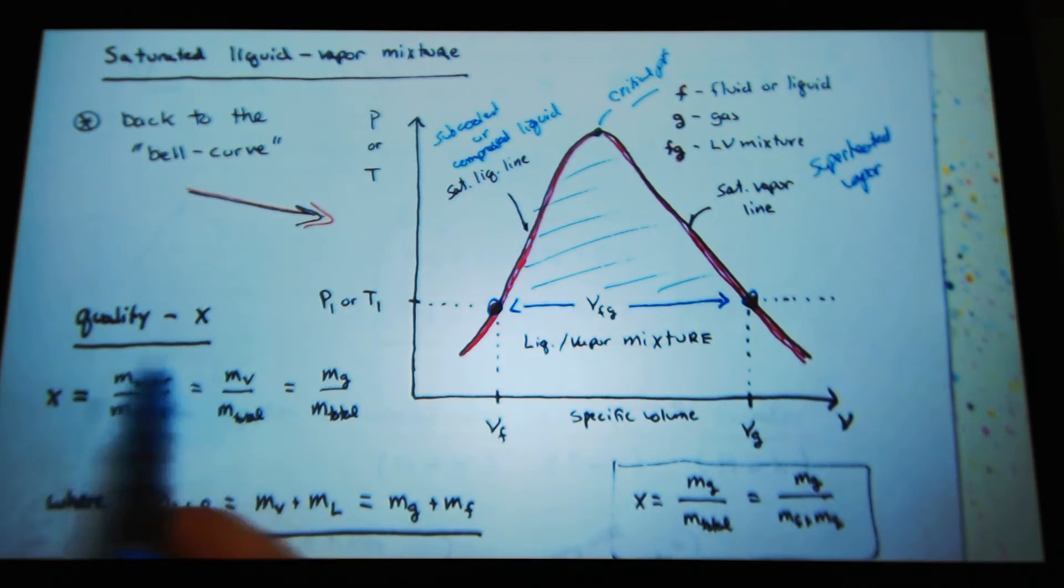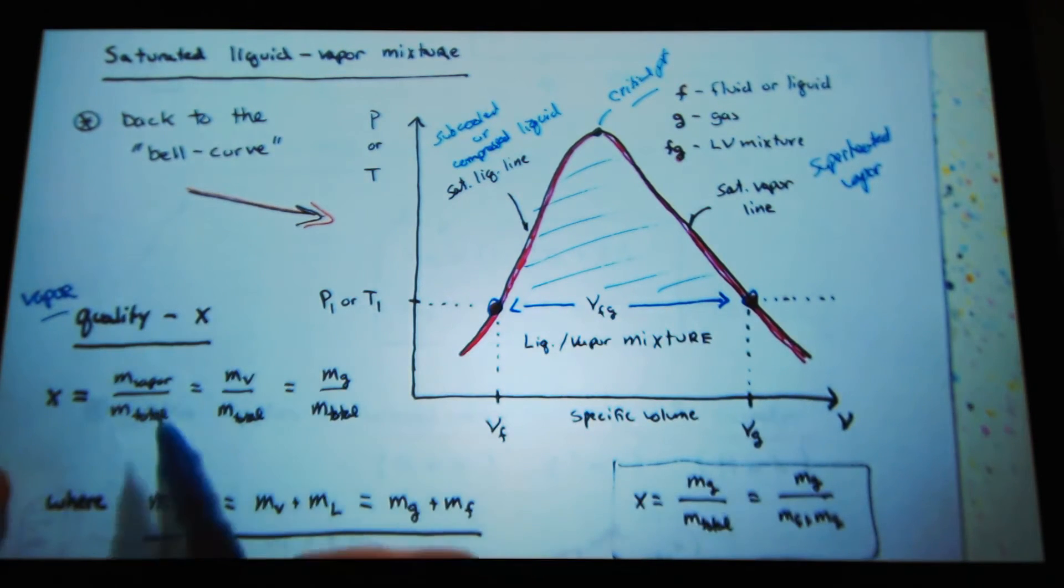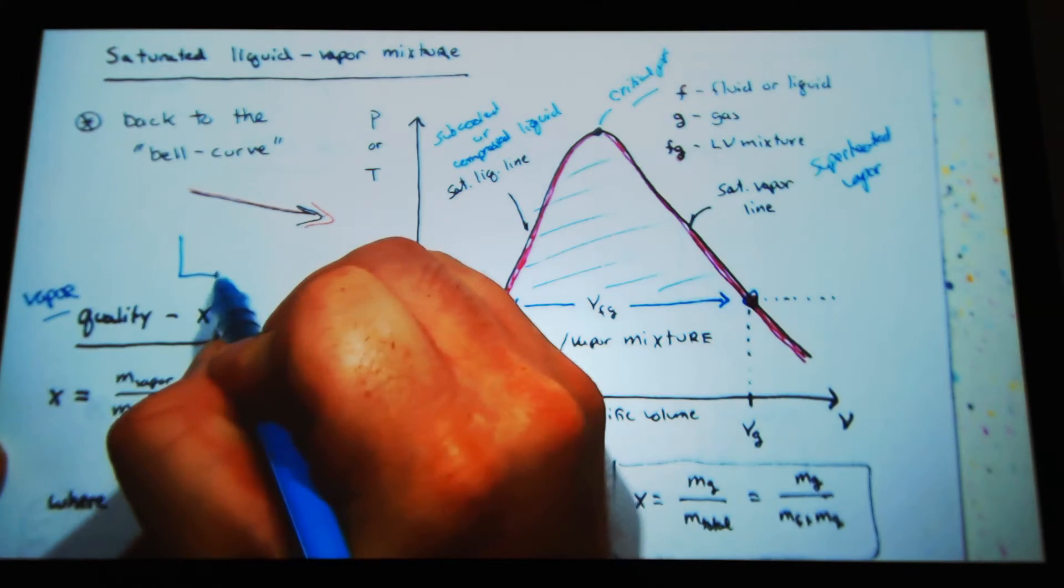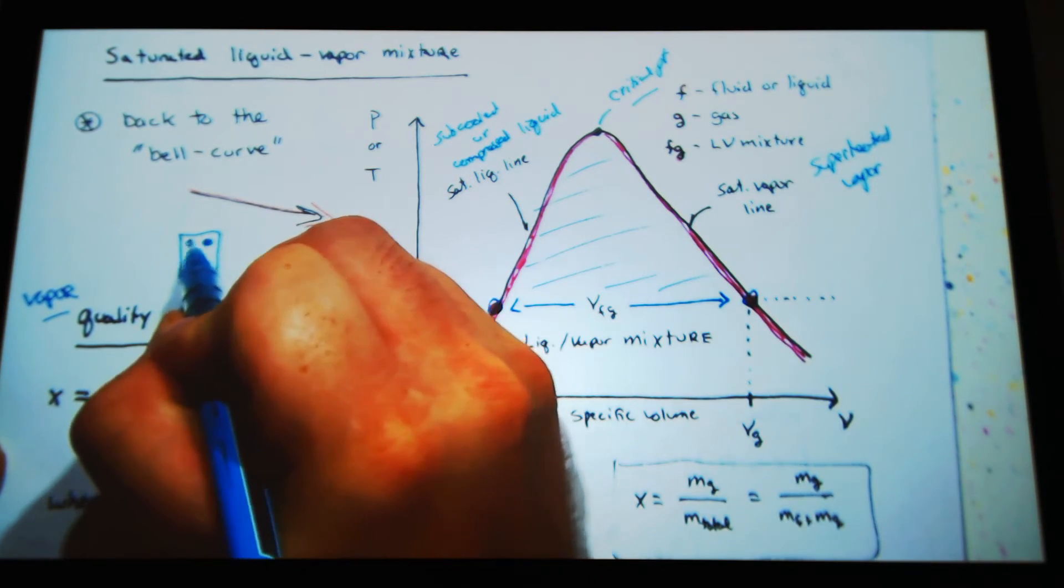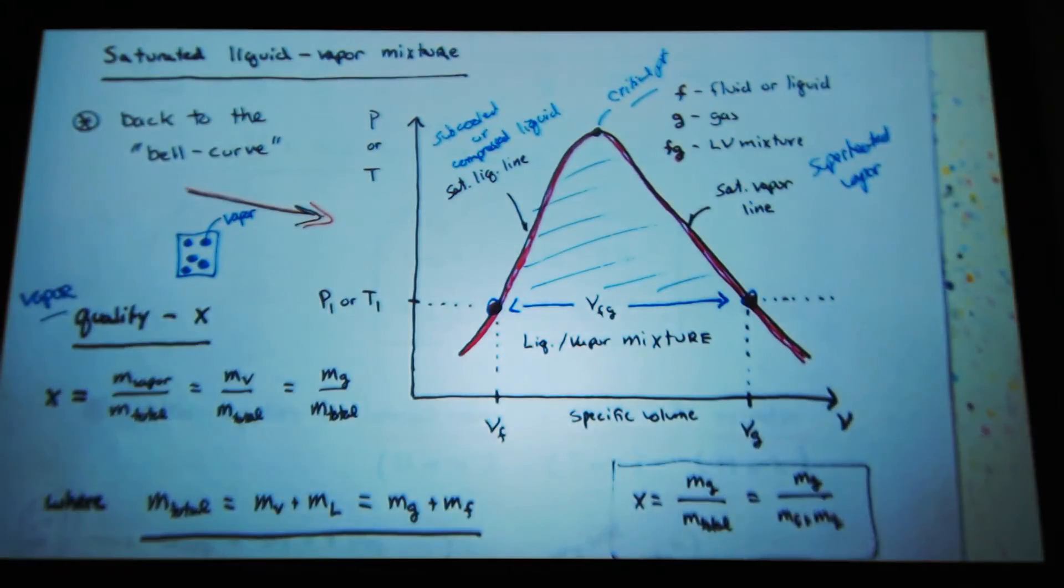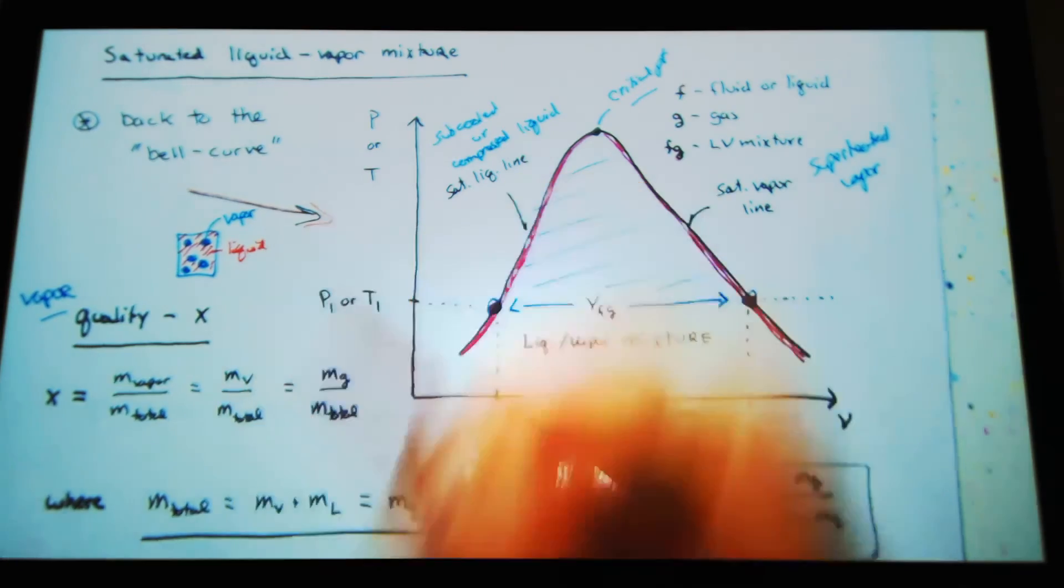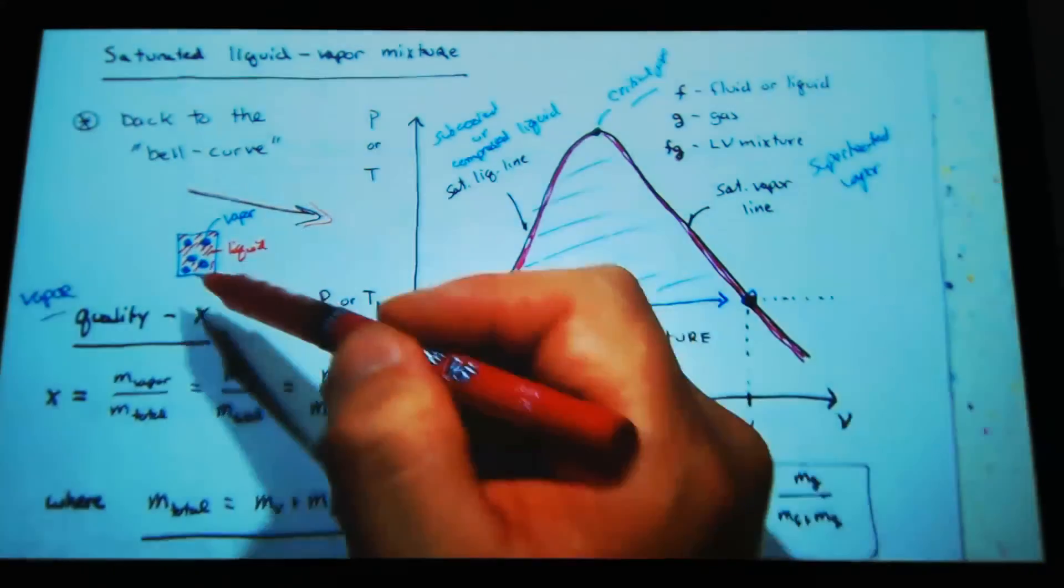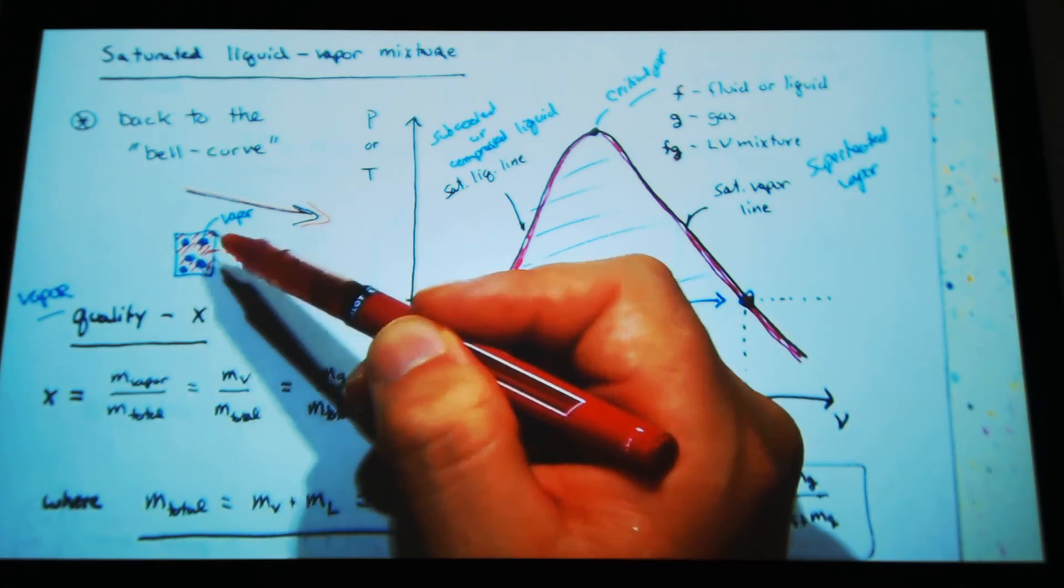We're interested in this region where we have liquid vapor mixture. And so related to that is this quality. Sometimes it's called the vapor quality, x. So if I draw a little cube and I put in all of these little packets, of course it's going to be well distributed. All of these represent vapor and everything surrounding it in red is liquid.